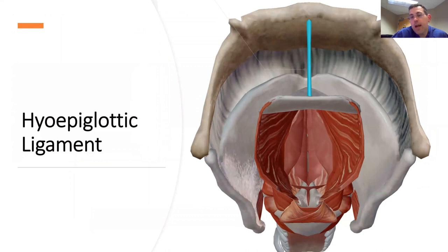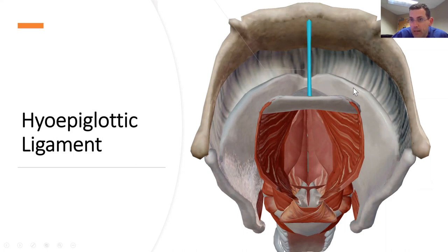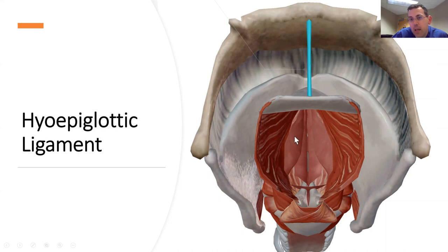The first anatomic slide is really important for our curved blades. I want to talk about the hyoepiglottic ligament. Here is the hyoid bone, here is the vallecula, here is the hyoepiglottic ligament. Here is the epiglottis, back here are the two arytenoids, and right in the middle are our vocal cords — the true vocal cords here, both closed right now. If they're open, you can see straight down through the trachea. Here are our false vocal cords on the side. If these were open, this is the grade one view you should see during direct laryngoscopy.